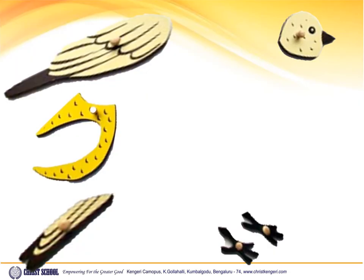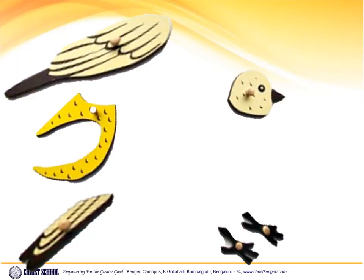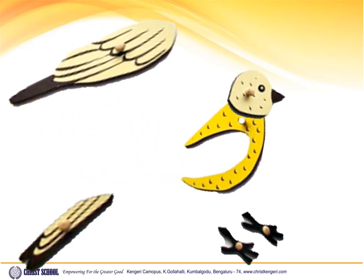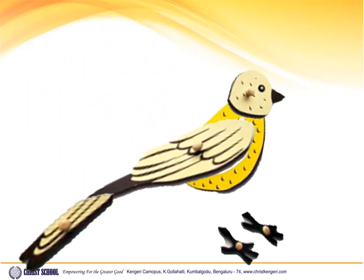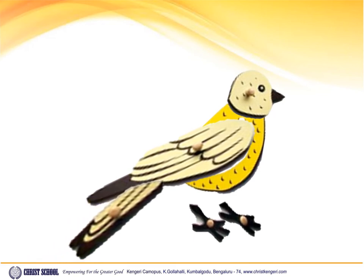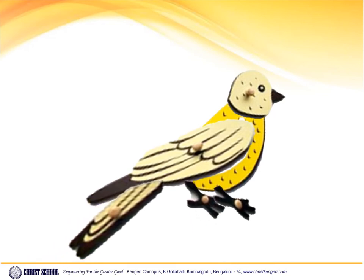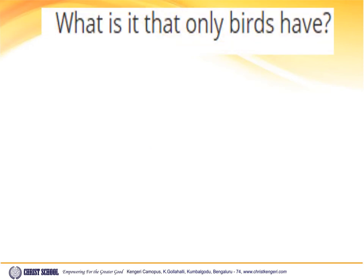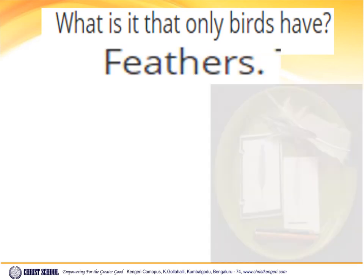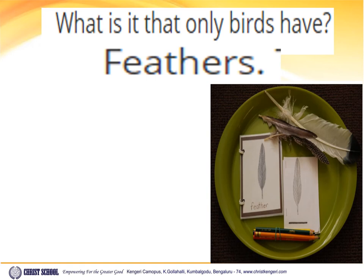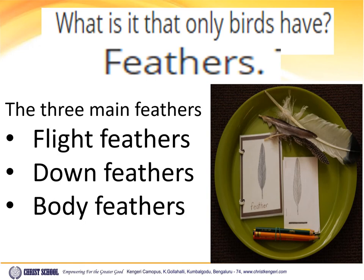Let us assemble the body parts of the bird. What is it that only birds have? Feathers. Look at the feathers — how do they look? The three main feathers are flight feathers, down feathers, and body feathers.